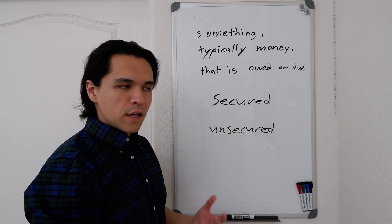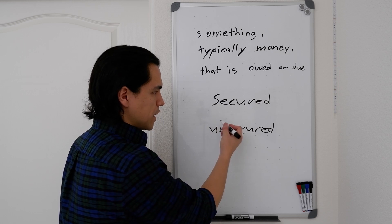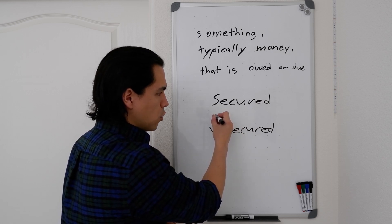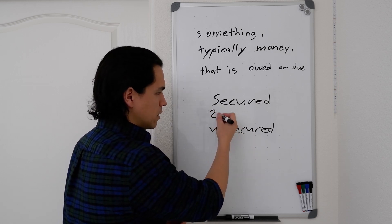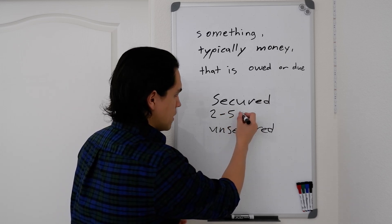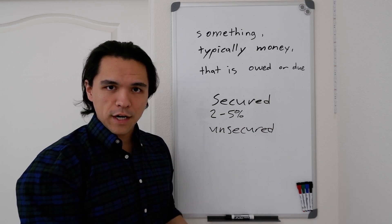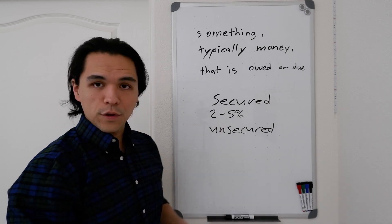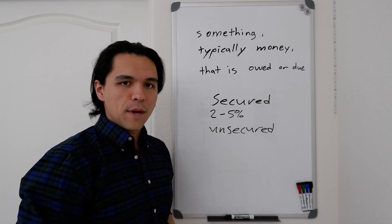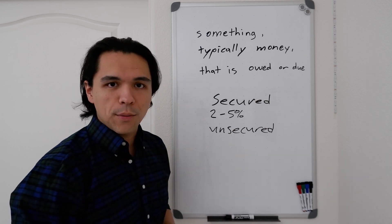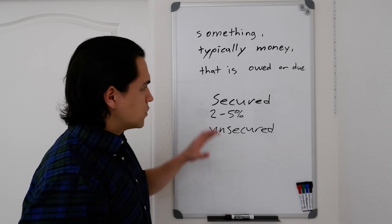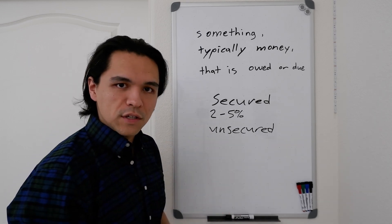So these secured loans typically carry rates of, say, a home or an auto might dip down into the twos all the way up to maybe in the 5% range, thereabouts, depending on your credit. And sometimes if you have really good credit, an auto manufacturer might even offer a 0% interest rate loan. So that's kind of the power of having that security there.